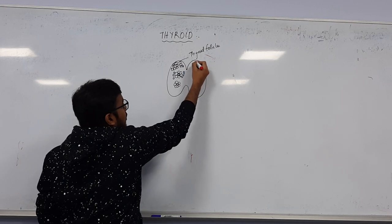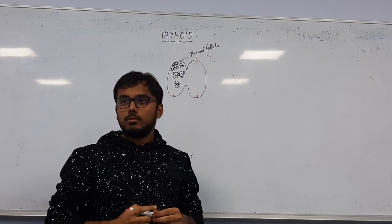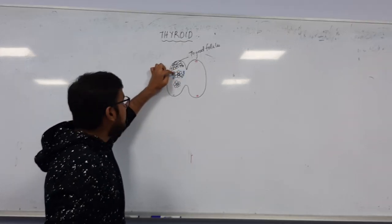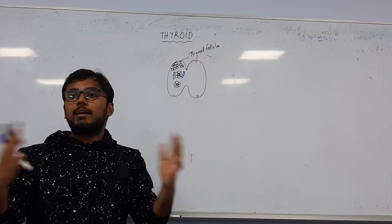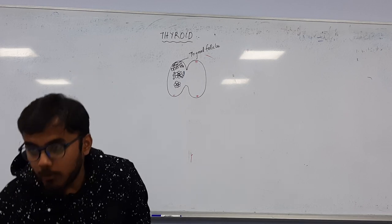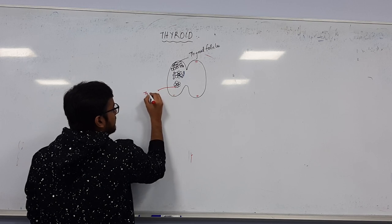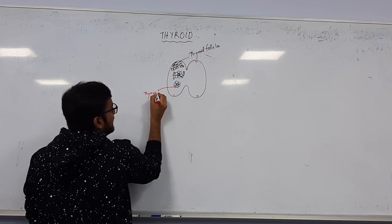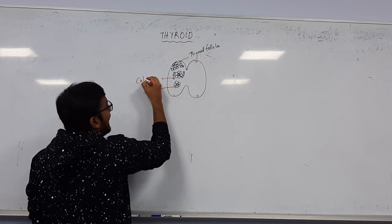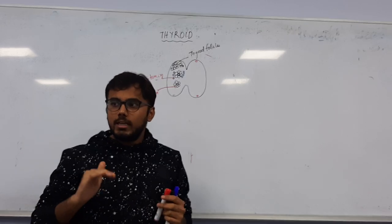The thyroid follicle has follicular cells surrounding it, and beside these are the para-follicular cells. The follicular cells release thyroxin - that is T3 and T4. The para-follicular cells release calcitonin, which is a calcium-lowering hormone.